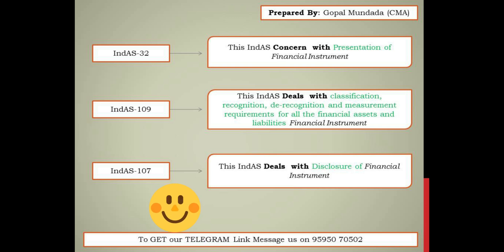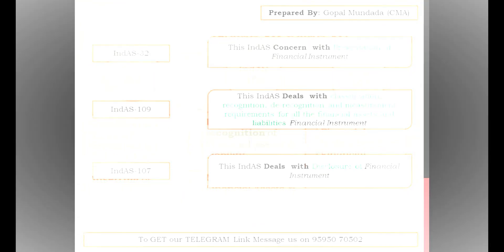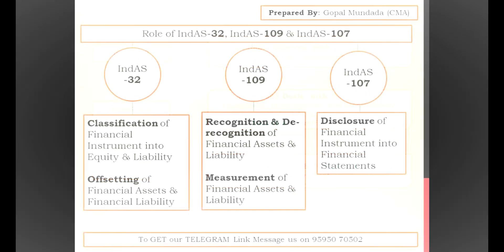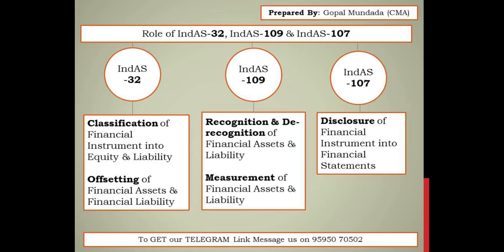I hope your doubt about the applicability of these three Indian AS to financial instruments is now eliminated. Now, Ind AS 32 plays a role in classification of financial instruments into three parts: financial assets, financial liabilities, and equity instruments. The next role of Ind AS 32 is offsetting financial assets with financial liabilities.